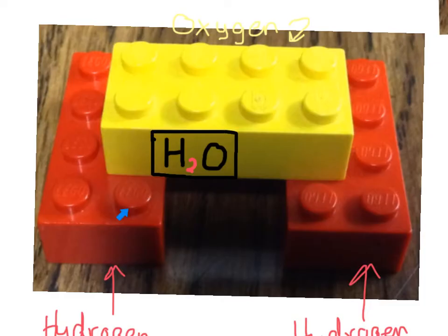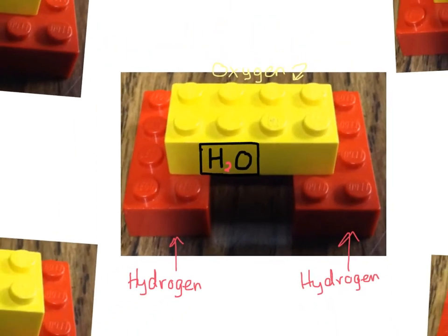And they are chemically bonded together. You can see, just like Legos stick together, atoms also stick together sometimes. So when we have more than one atom stuck together like this, we call it a molecule.